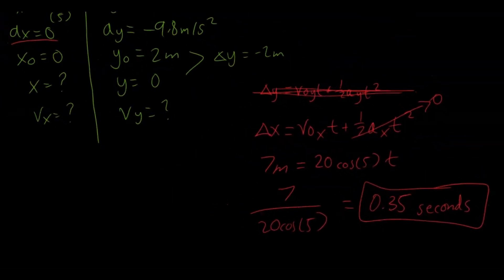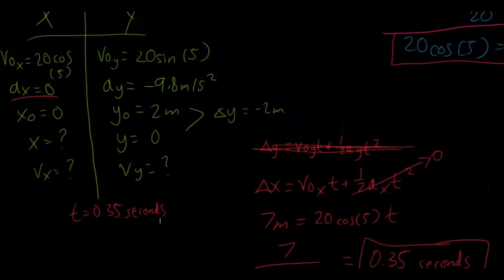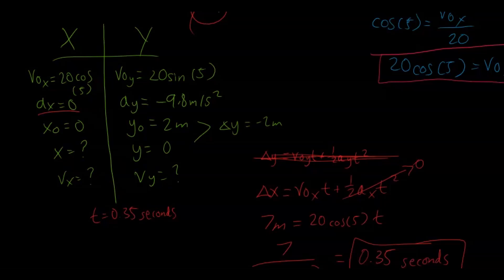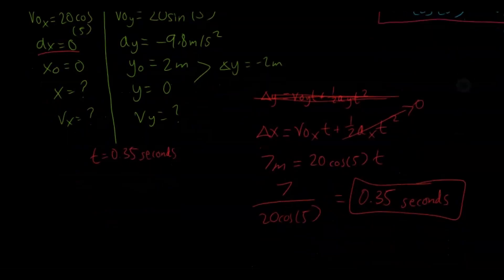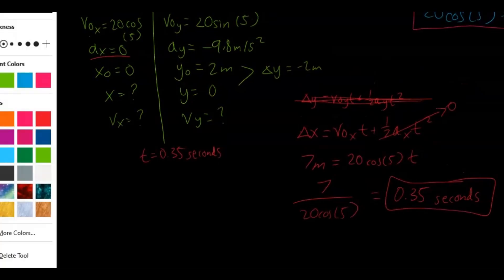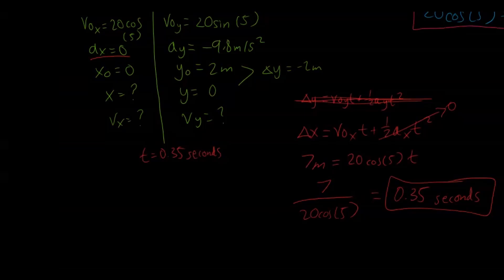All right, so now we have the time, and the time links the x and y direction. So the time equals 0.35 seconds. So now we know that at exactly 0.35 seconds, the ball is going to be in line with that net. Now the question is, is it over the net or did it go into the net? And this is where we want to find the height. All right, so now we want to use the y direction. So I'm going to switch colors. Let's use yellow.